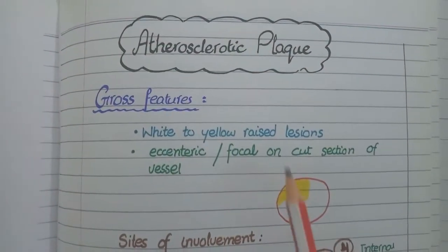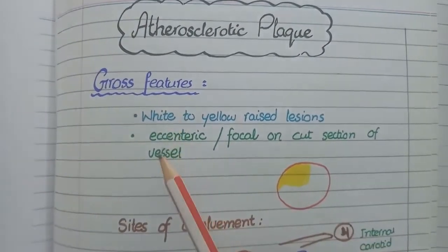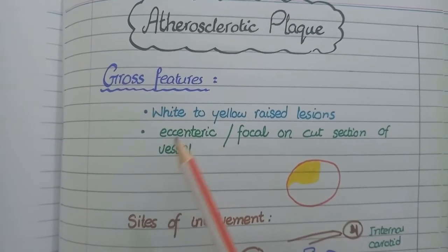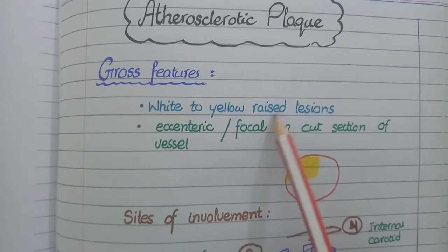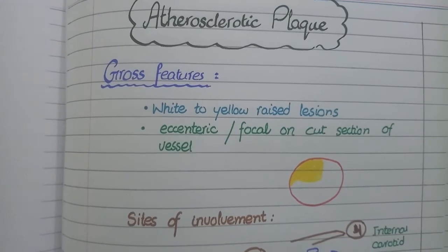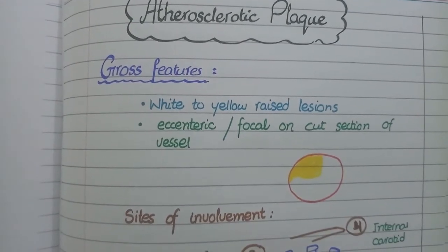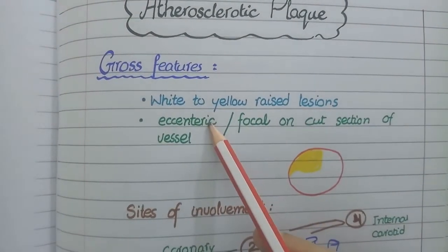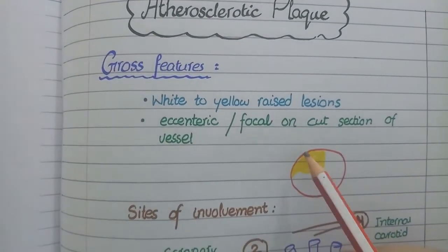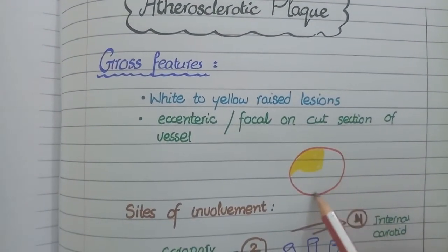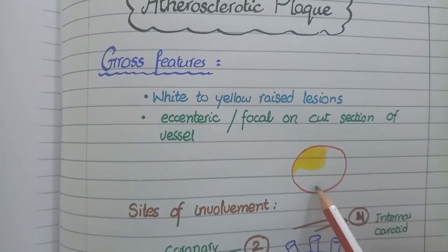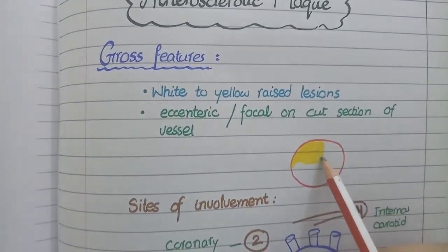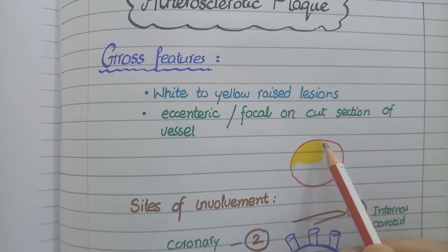Now the gross features of atherosclerotic plaque: on gross specimen of a diseased vessel, atherosclerosis is present as white to yellow colored raised lesions. On cross-section of a vessel, the plaque is visible as eccentric or focal lesions. The word eccentric means it does not affect the full 360 degrees of the vessel in a circular way; rather, it occupies a small part of the circumference of the vessel, as seen in the diagram.